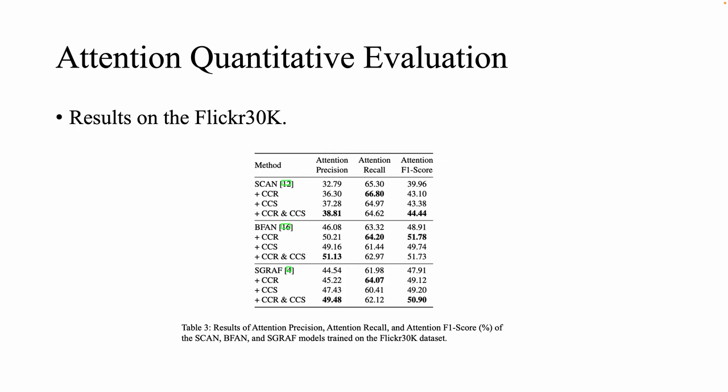We can see that applying CCR and CCS individually yields higher attention F1-score than baselines. More interestingly, we can find that using CCR alone improves both attention precision and recall. Using CCS alone mainly improves attention precision. Combining both constraints further improves attention precision. These results show the constraints work as intended.